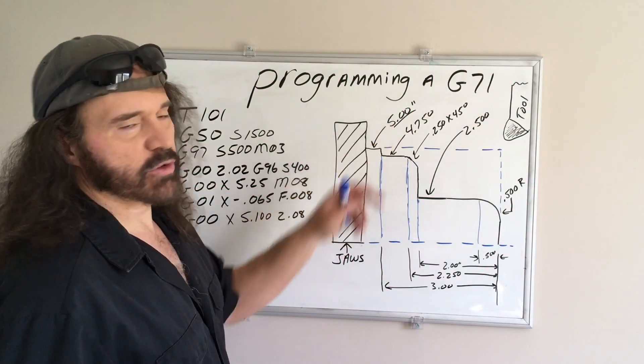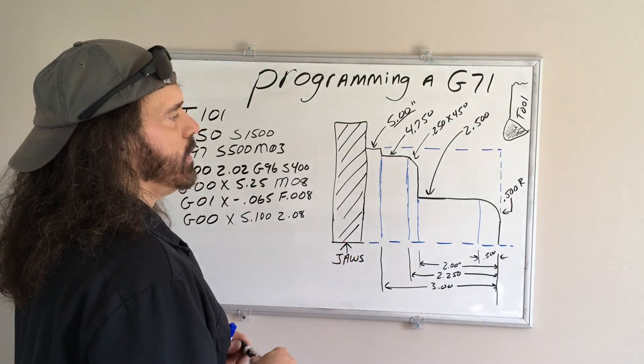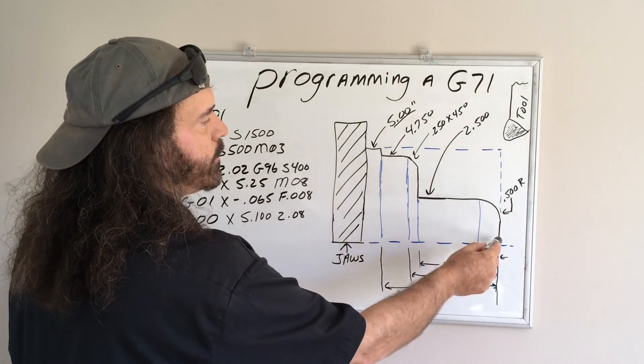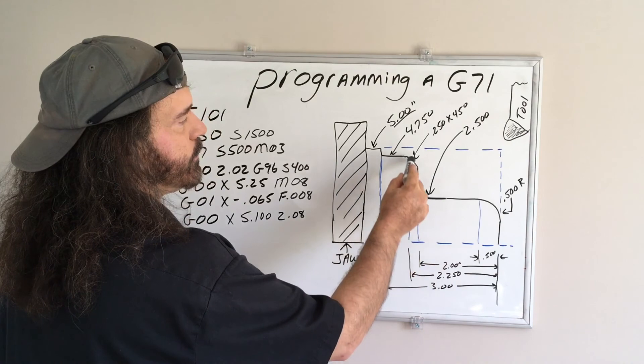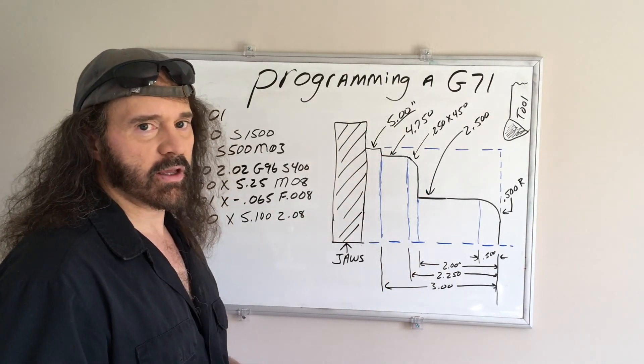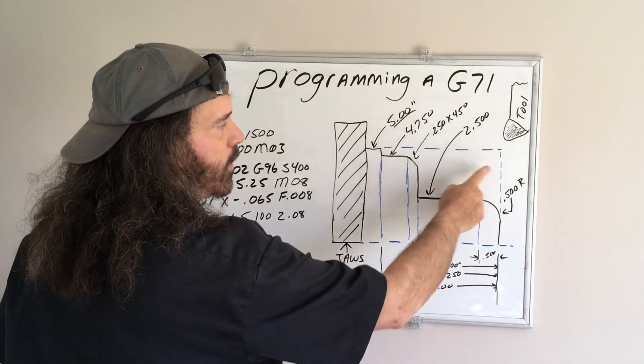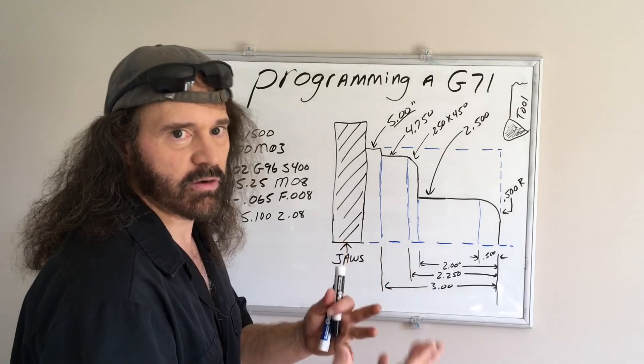Let's say your part diameter is five inches, you've got five inch round stock, and you have to make this cut. Now if you weren't using a canned cycle, you'd have to manually program all these cuts to whittle away the material.